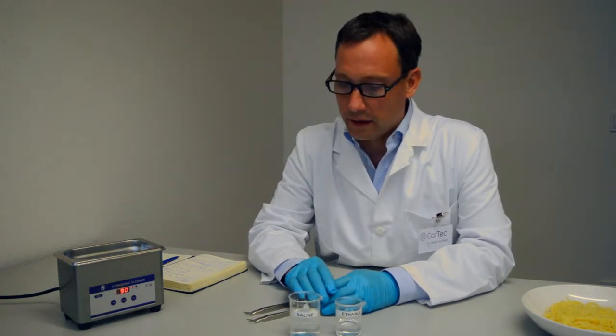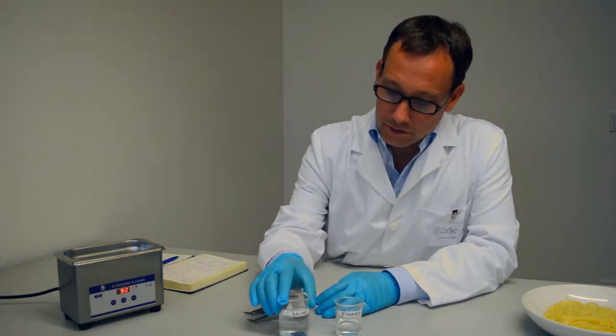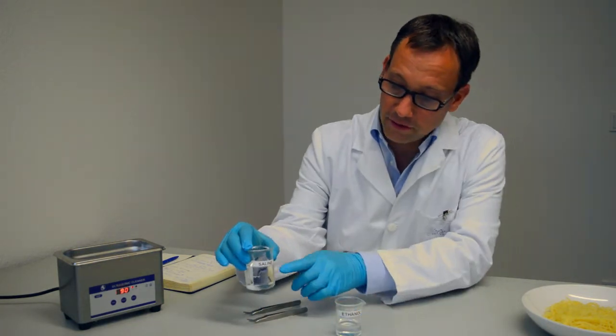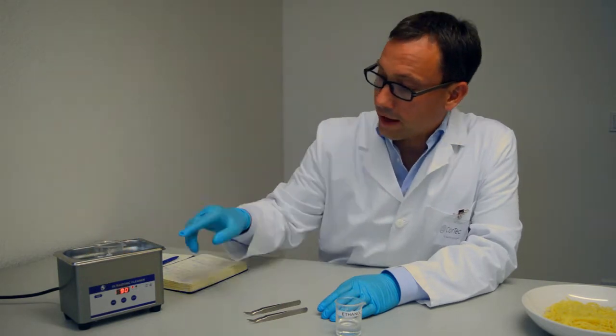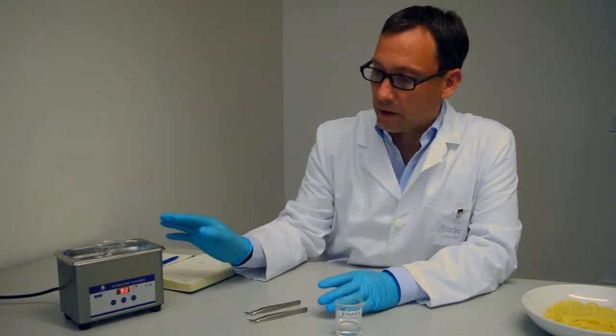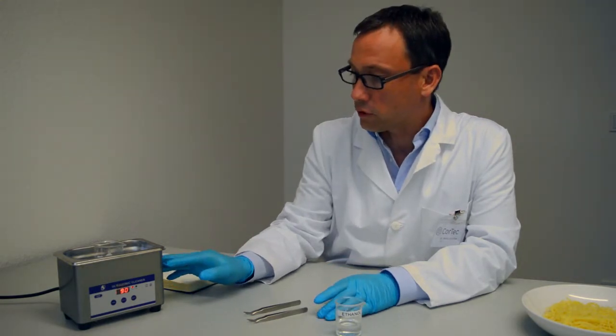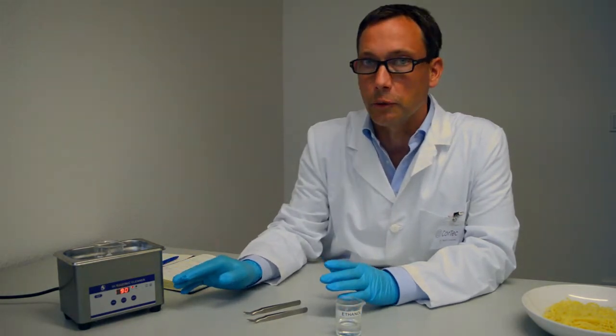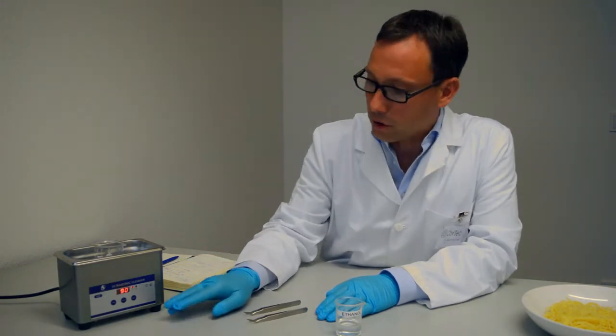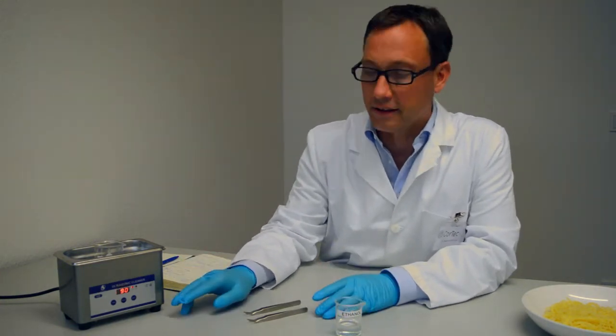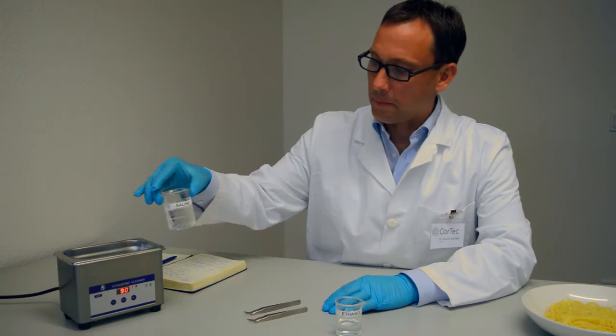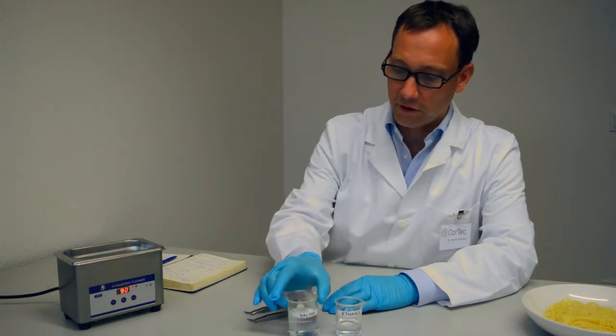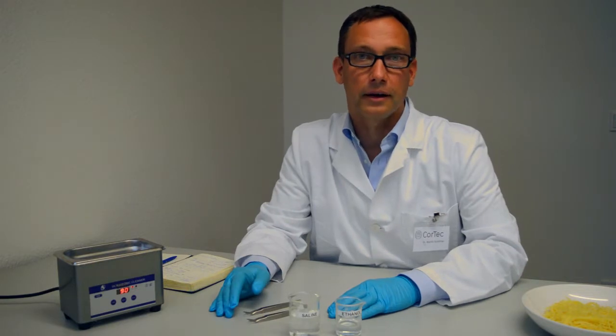In this case we recommend sonicating the electrode in the saline. For that we have a small ultrasonic tank. This one has about 800 milliliters of filling volume and 35 watts, so it's a really weak ultrasound, and we apply the ultrasound for not more than 90 seconds. Now all the bubbles should be removed from the surface of the cuff electrode and it is ready to be implanted.